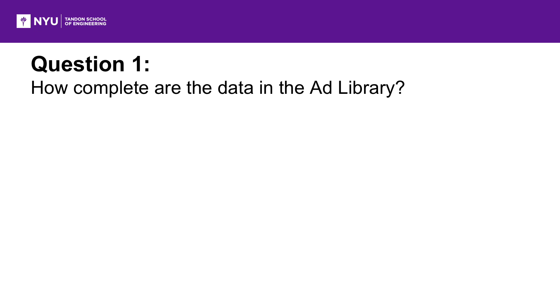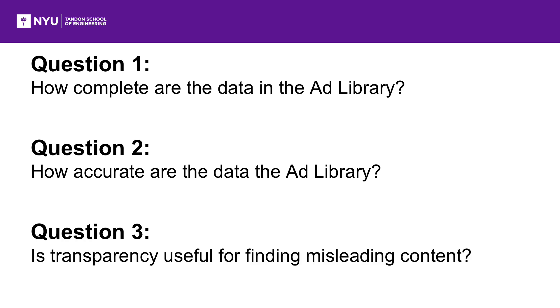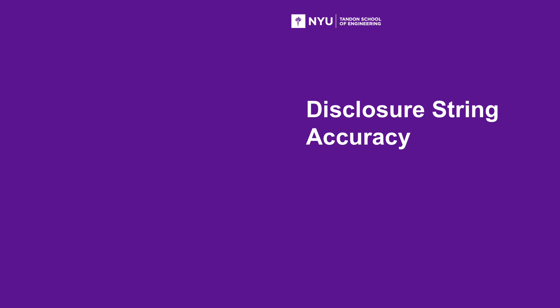Now that we have all this data, we can start asking questions. We started with three very broad questions: How complete are the data in the ad library? How accurate are the data in the ad library? And is transparency useful for finding misleading content? To get at those questions, we needed to start by looking at disclosure string accuracy. One of the cornerstone ideas of Facebook's new policies is that users should be able to know who is paying to show them ads, and third parties like journalists should be able to find out who's responsible for a particular ad. For this to work, disclosure strings need to be consistently present and consistently accurate.